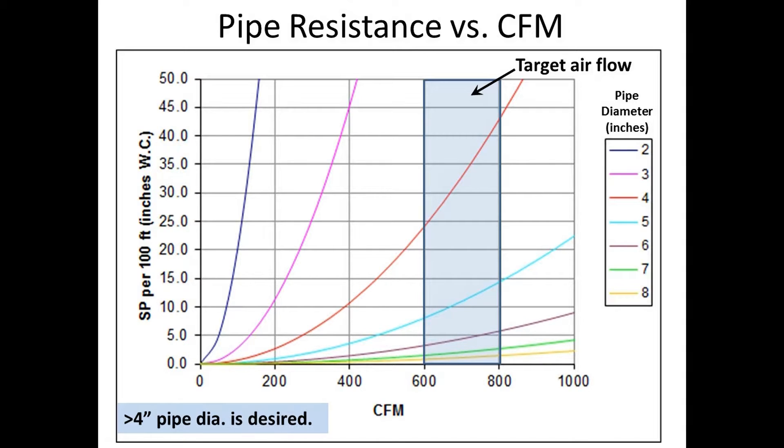If we go up to even three inches, okay, now we've gotten above 200 CFM, but still look at the static pressure. Even at 200 it's up around 10. Again, not really what we're looking for. We're looking for a target range, at least for my shop, anywhere between 600 and 800.